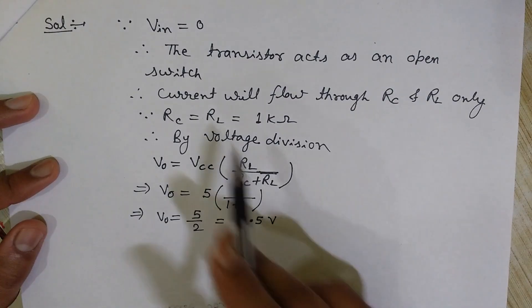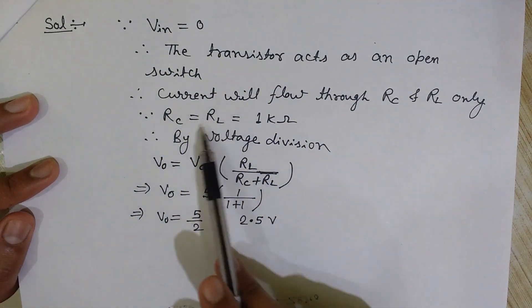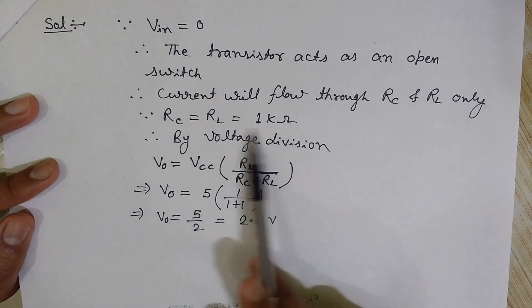RL and RC are given equal to 1 kilo ohm. I have explained that VIN is 0, so transistor acts as an open switch and the current will flow through the RC and RL resistors only.